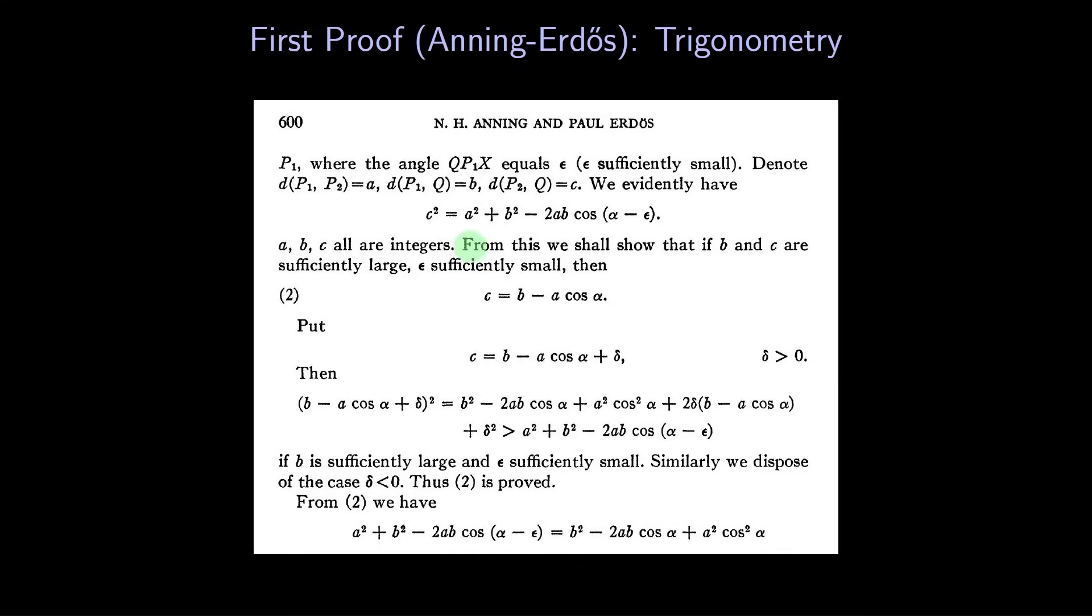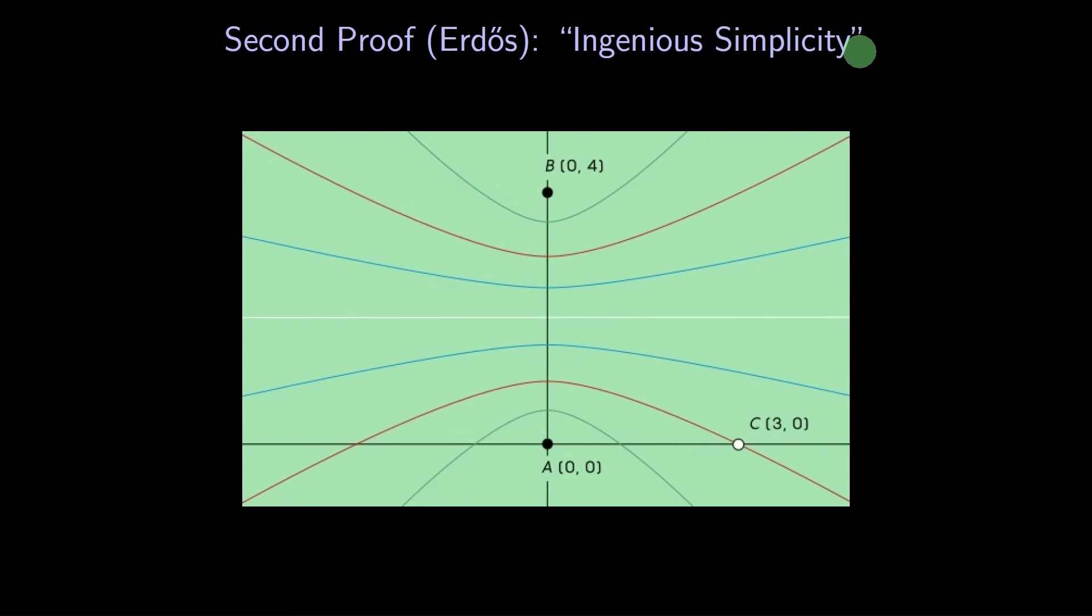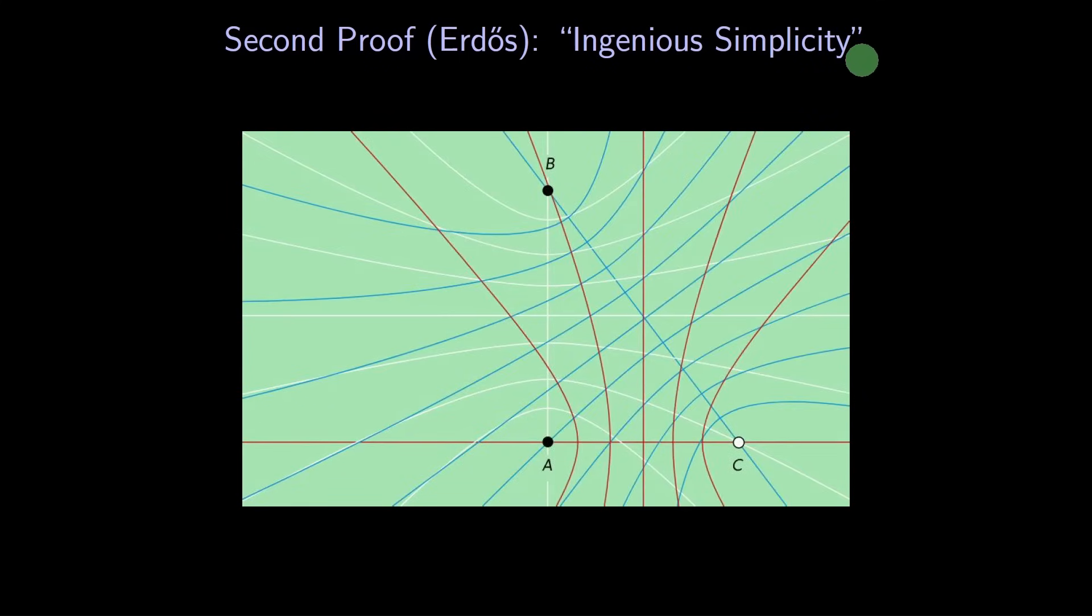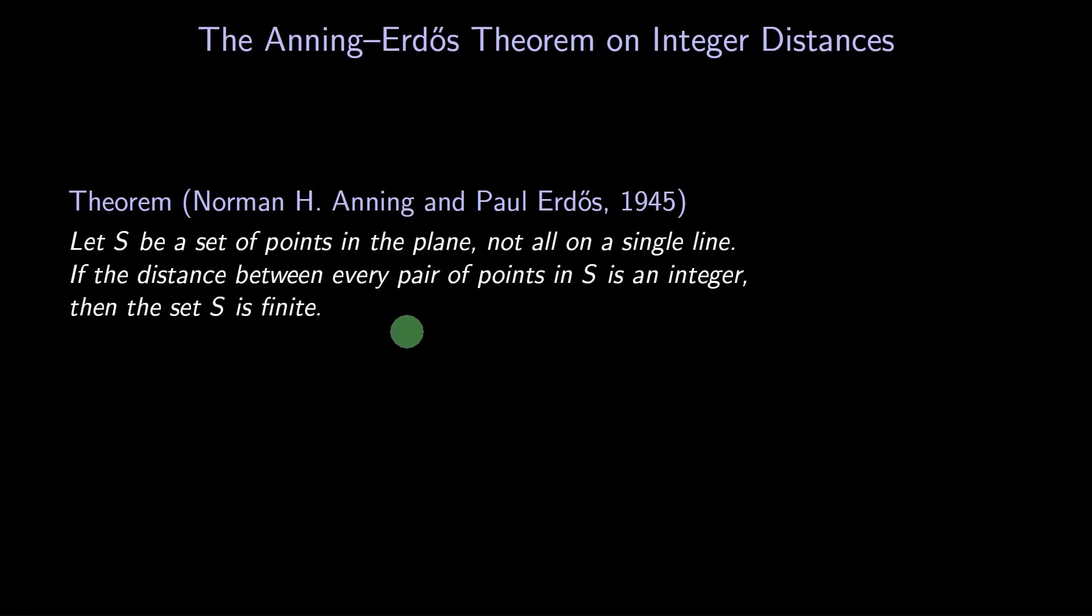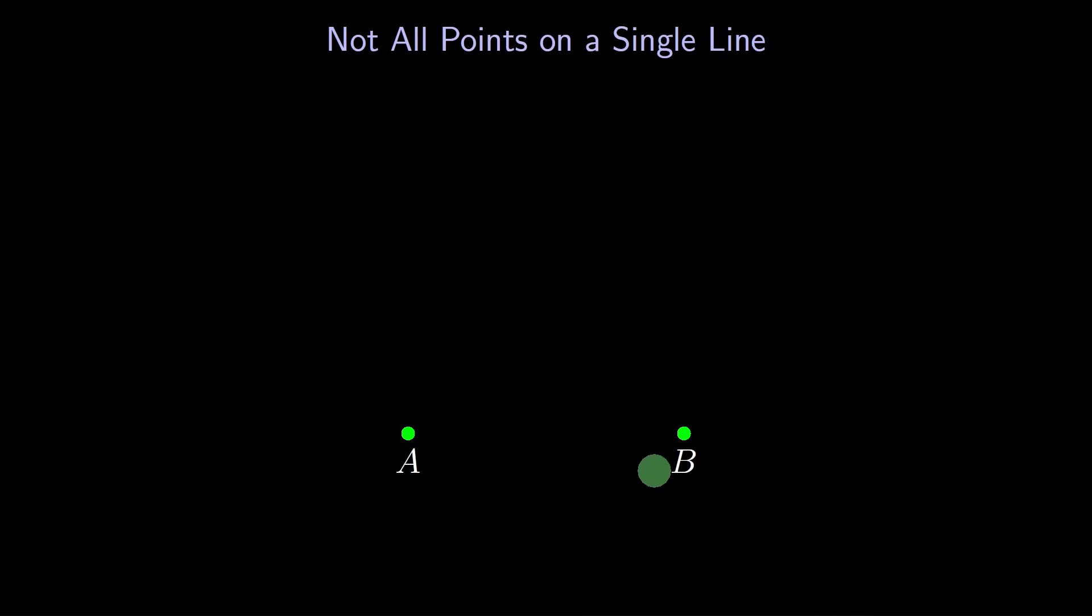Back to the Anning-Erdős result. Their original proof used trigonometry. It was a little messy. A few months later, Erdős alone published a second proof. It's been praised for its ingenious simplicity. That's the proof we'll go over. First, remember the statement of the theorem. We have a set of points. Not all the points are on the same line. All the distances are integers. We'd like to show that the set is finite. How shall we start the proof? Somewhere we'll need to use the hypothesis that not all the points are on the same line. Let's start there. Pick two points in our set. Call them A and B. There's a unique line through them. Not all the points can be on this line. So let C be one of the points not on this line.